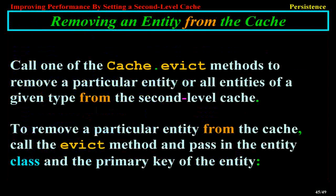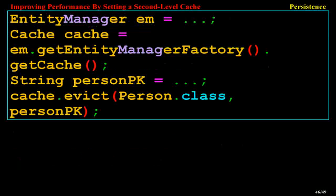Removing an Entity from the Cache. Call one of the Cache.evict methods to remove a particular entity or all entities of a given type from the second-level cache. To remove a particular entity from the cache, call the evict method and pass in the entity class and the primary key of the entity: EntityManager m = ...; Cache cache = m.getEntityManagerFactory().getCache(); String personPK = ...; cache.evict(Person.class, personPK).